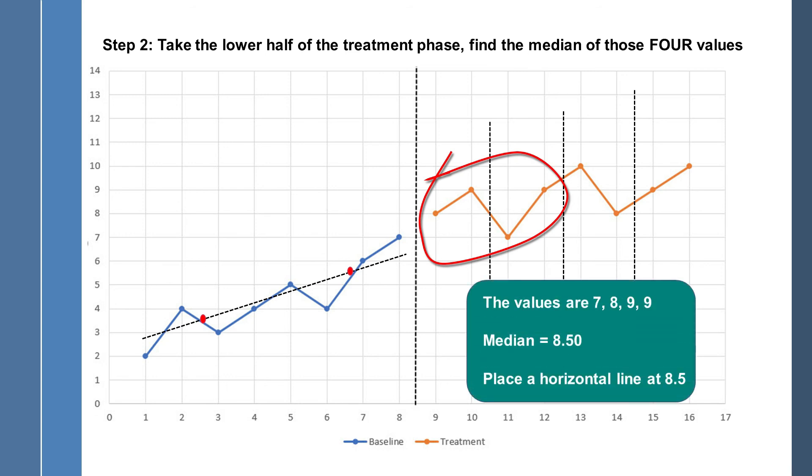And the values on the y-axis for these data points are 7, 8, 9, and 9. The median of that set of scores is 8.5. So we're going to place a horizontal line at 8.5. And then drop a dot where it crosses that first quartile line. So there's our dot.